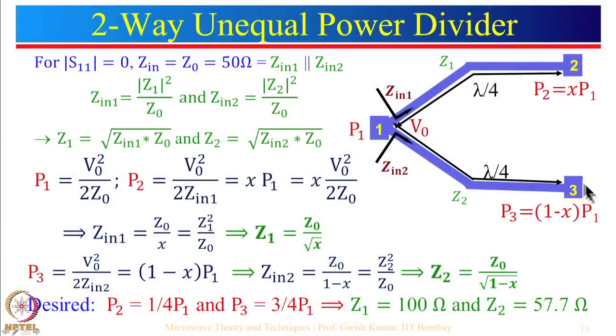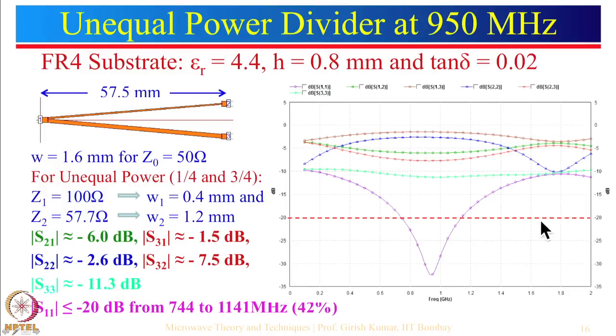The same principle applies here: if the width of line Z1 is small, less power goes there. The simulation for the one-fourth and three-fourths design shows: for 100 ohm, width1 = 0.4 mm; for Z2, width = 1.2 mm. One fourth of power is approximately minus 6 dB and three fourths is shown correspondingly. Matching is obtained and the bandwidth is about 42 percent.